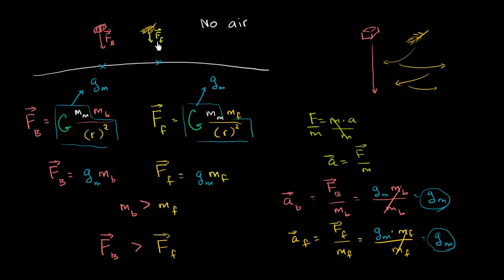If that's true on the moon, it should also be true on Earth. And it would be. If you did this exact same experiment and evacuated all the air from the room — removing air resistance — and dropped a brick and a feather at the same time, they would both hit the ground at the exact same time, even though it's unintuitive to imagine a feather plummeting like a brick.